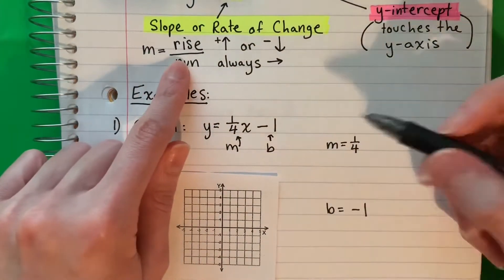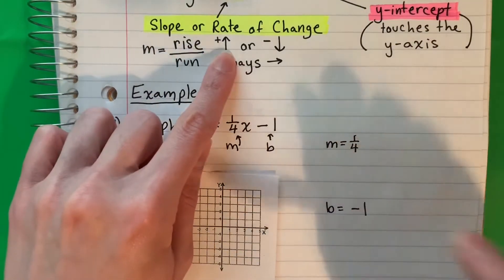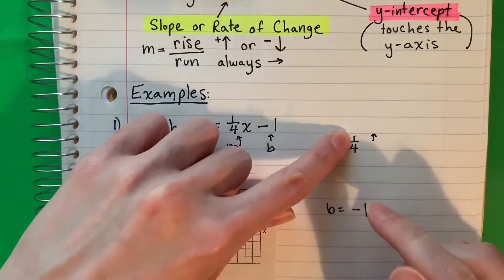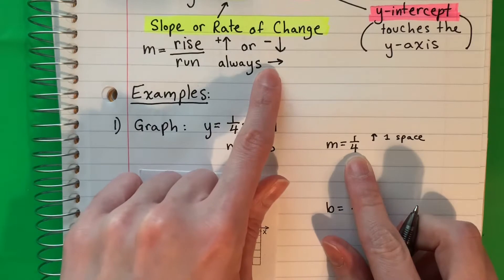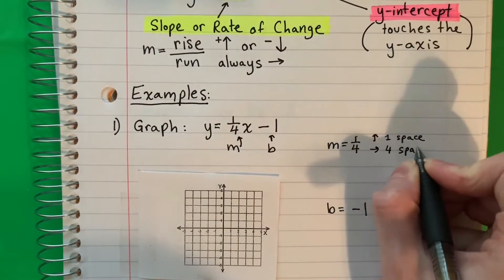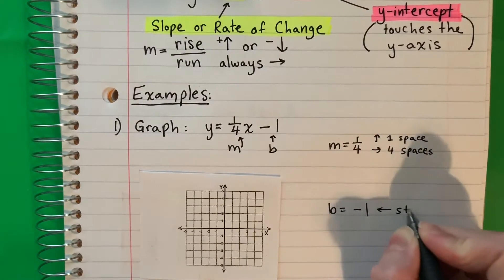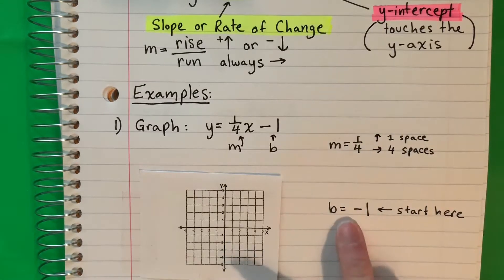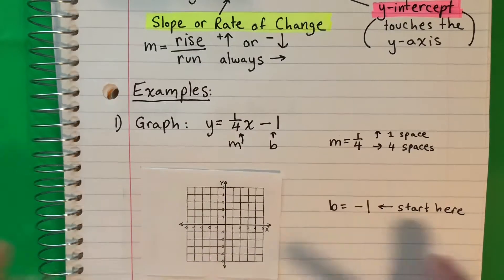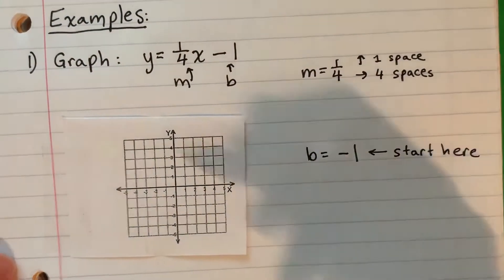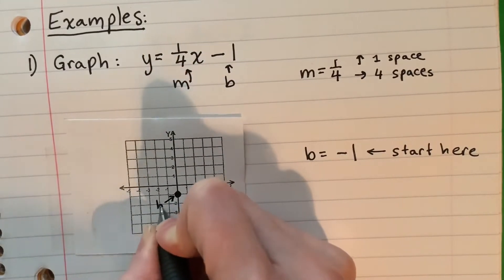My m gives me a rise and a run. The one on top is my rise — it's positive, so I'm going to move up one space. The four is my run, so I go to the right four spaces. My b is the y-intercept, negative one — this is where I'm going to start. So I find negative one on the y-axis and put a point there.